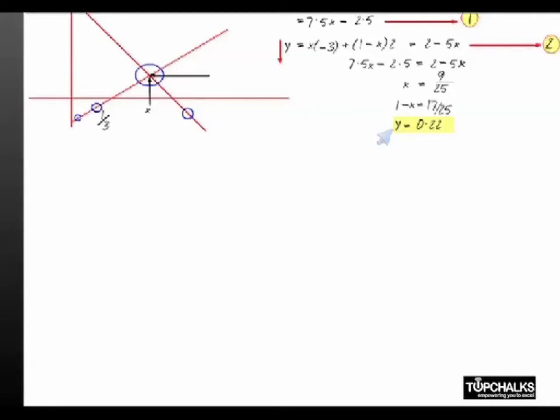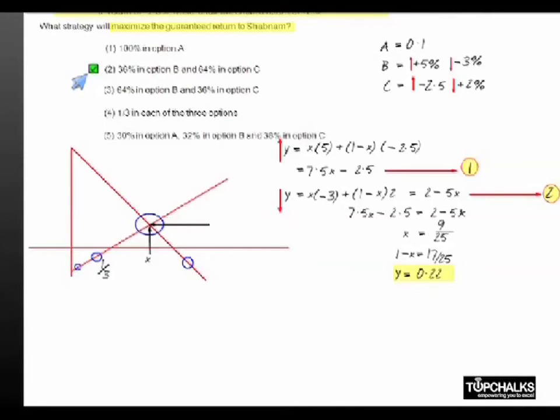Hence the option that we will exercise would be to invest 36% in option B and 64% in option C. 36% remember is equivalent to the fraction 9 by 25. Hence the appropriate answer is 2.